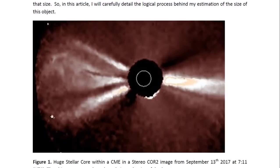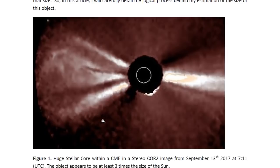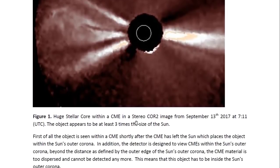You can see it looks huge and just an eye comparison of a rough estimate, this is what I use here comparing it with the size of the Sun as indicated by the white circle on the occulter. It seems to be at least three times the size of the Sun. And this is a STEREO COR2 image from September 13th, 2017 in which this object appears actually within a CME.